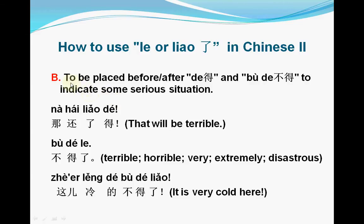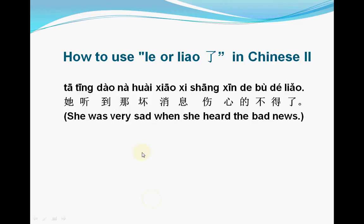As an adverb, the second usage is to be placed before or after 得 and 不得 to indicate some serious situation. For example, 不得了 (bùdéliǎo) also means 'terrible', 'horrible', 'very', or 'extremely'. Example sentence: 这儿冷的不得了 — 这儿 means 'here', 冷 means 'cold', 不得了 means 'very/extremely' — so it means 'It is extremely cold here'.